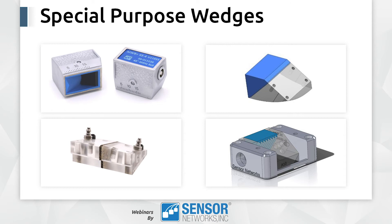Along with flat and radius probes, there are a lot of special purpose wedges out there. As you can see on this slide, there are integral wedges to the transducers themselves, both for phased array and conventional. There are many different varieties of phased array wedges — either skewed or multi-radiused wedges — as well as dual wedges with irrigation ports. And there are wedges with different ring assemblies or gimbal mounting points to be used in scanners or different fixtures.